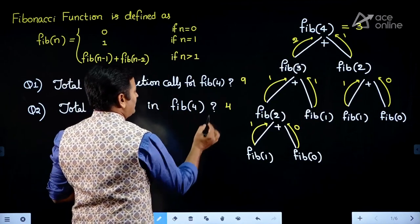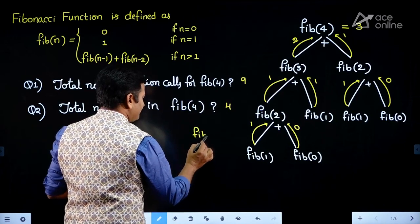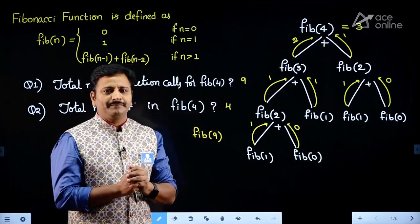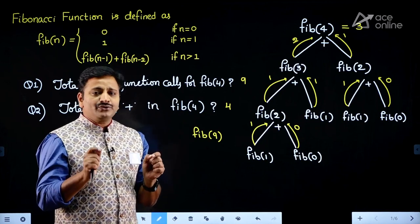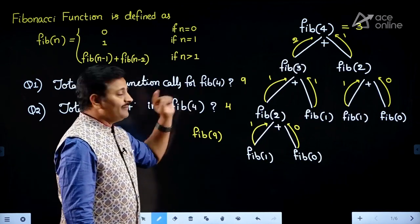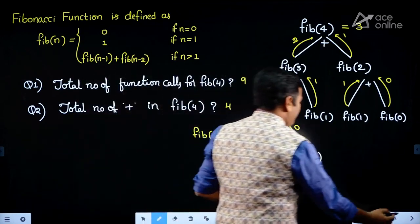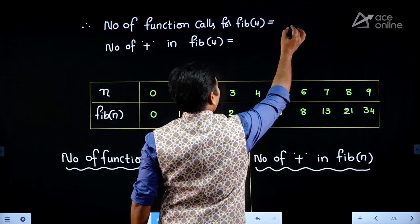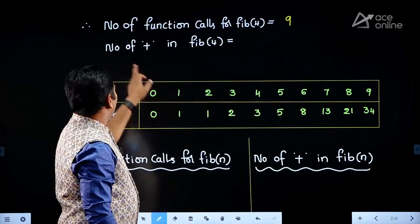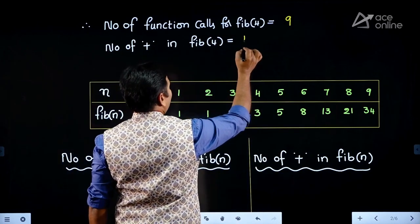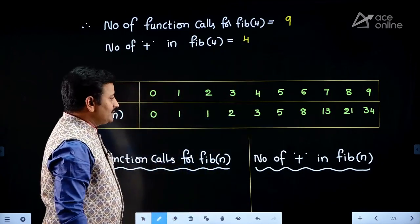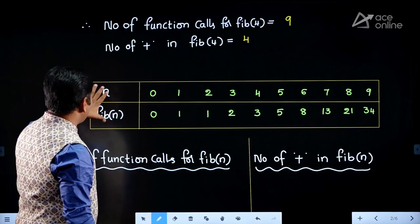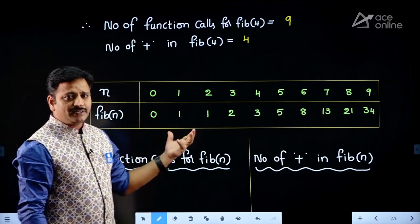For example, instead of Fib(4), if they ask Fib(9), it is very difficult to draw the recursion tree. So I am introducing a shortcut method for computing the number of function calls for Fib(n). For Fib(4), the number of function calls is 9 and the number of plus operations is 4. We are developing a formula for this, and for that purpose you need to design the Fibonacci table — you already know the Fibonacci table.